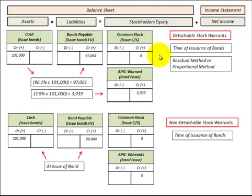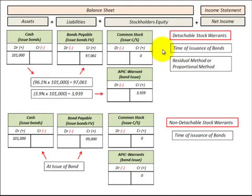Let's make a comparison between a detachable stock warrant and a non-detachable stock warrant, in terms of a stock warrant attached to a debt security or a bond. These stock warrants give the opportunity of either the bond holder or the holder of the warrant, depending on the case, the opportunity to buy a specified number of shares of common stock of the company at a specified price.